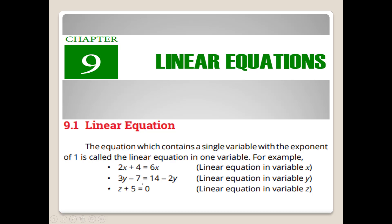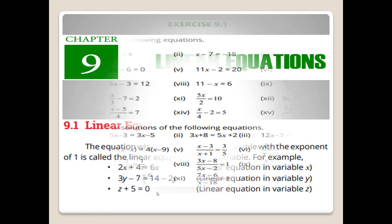3y minus 7 is equal to 14 minus 2y — linear equation in variable y. z plus 5 is equal to 0 — linear equation in variable z. یعنی کہ یہاں x variable ہے تو linear equation in variable x، یہاں y variable ہے تو linear equation in variable y، اور یہاں z variable ہے۔ Linear کا مطلب ہے 1، یعنی اگر variable کی power 1 ہو تو وہ linear equation ہوتی ہے۔